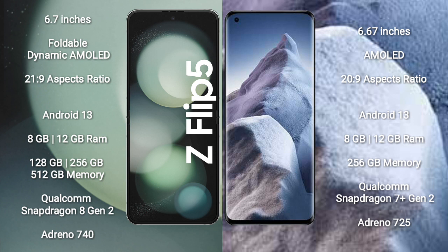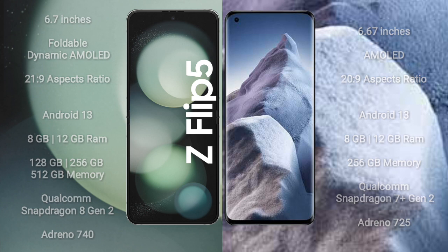Samsung Galaxy Z Flip 5 comes with 8GB or 12GB RAM and 128GB, 256GB, or 512GB internal storage, powered by a Qualcomm Snapdragon 8 Gen 2 processor and GPU Adreno 740. Xiaomi Poco A5 comes with 8GB or 12GB RAM and 256GB internal storage, powered by a Qualcomm Snapdragon 7 Gen 2 processor and GPU Adreno 725.